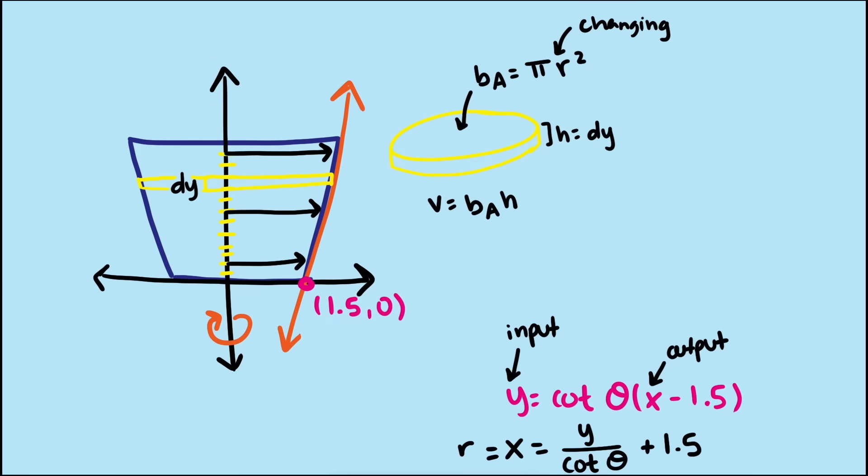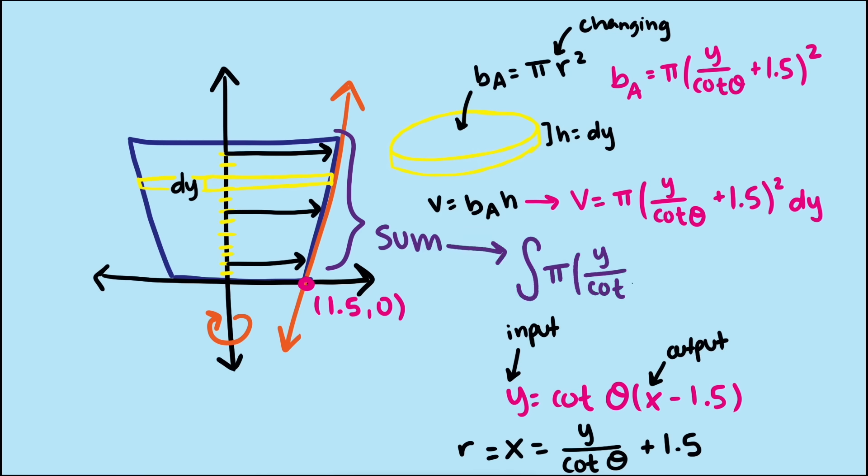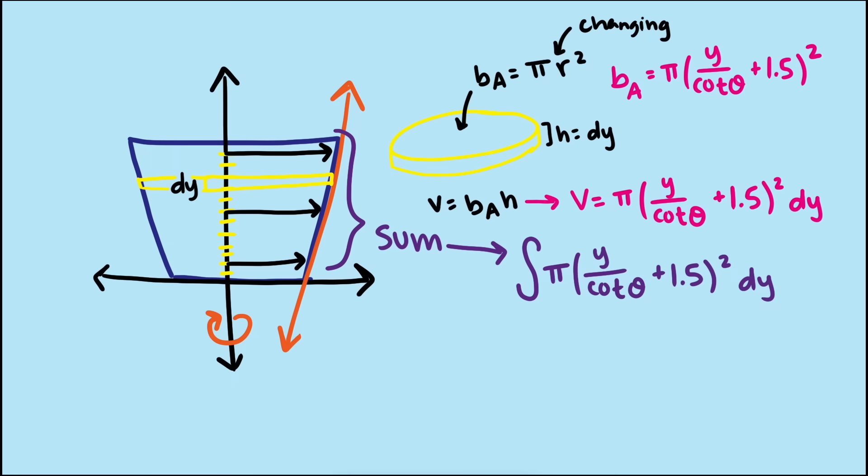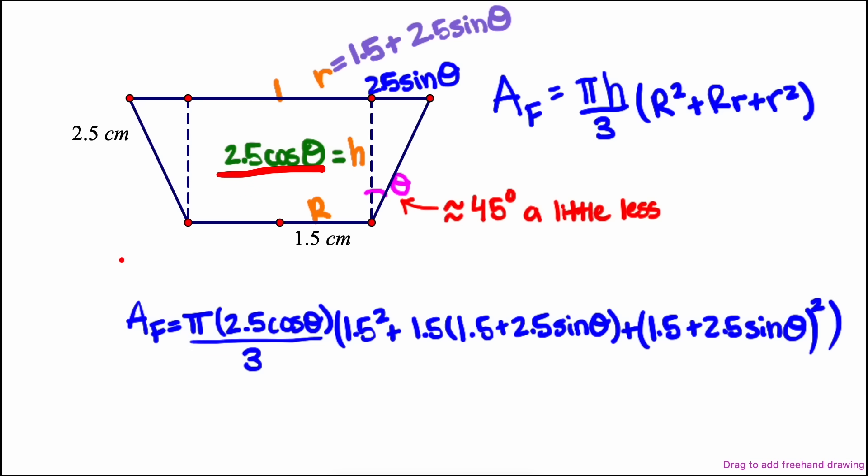Now we can square the radius, multiply by pi, which is the area of the base of the cylinder, and multiply by dy to get the volume. If we continue with these products along the y-axis and add them up, we get this integral. The bounds of this integral are all of the y-coordinates where we are accumulating volume. So y equals 0 to y equals the height, or y equals 2.5 times cosine of theta.